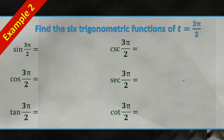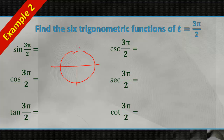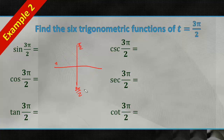Now let's try one that's a little harder. Find the six trig functions of 3 pi over 2 on your own. If you're stuck, figure out where 3 pi over 2 is on the unit circle. Pi over 2 is here, 2 pi over 2 is pi, and 3 pi over 2 is down here. So 3 pi over 2 corresponds to the point (0, negative 1).